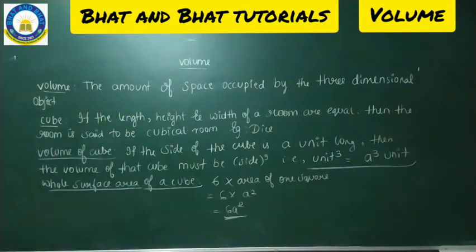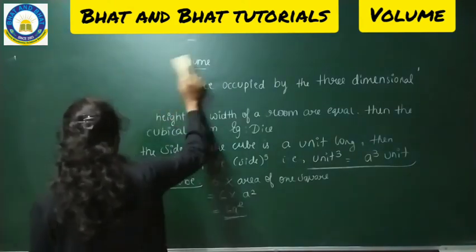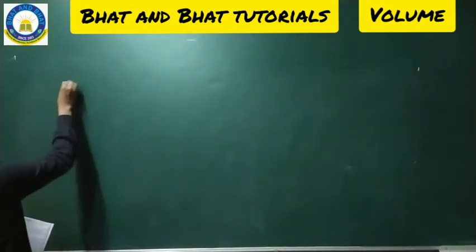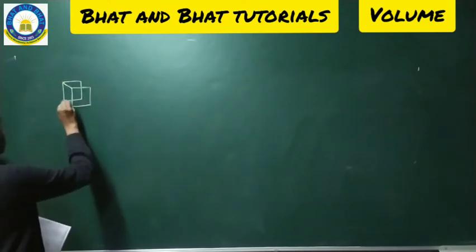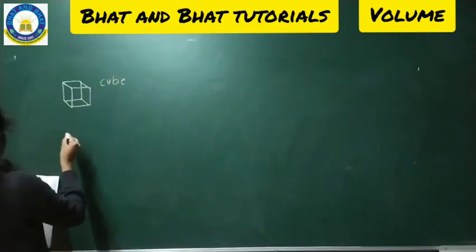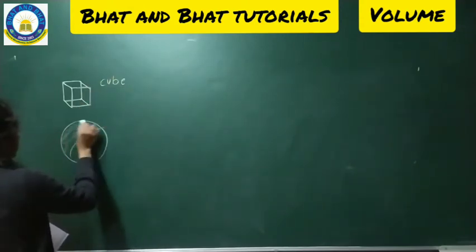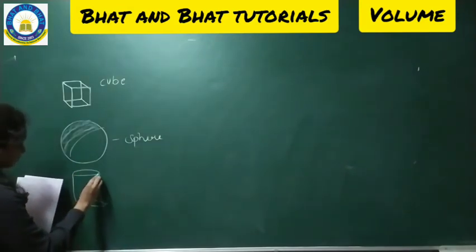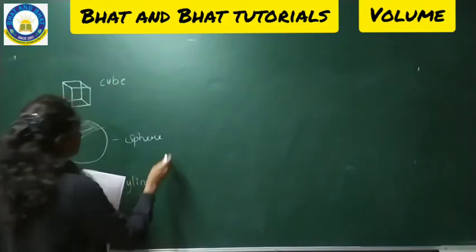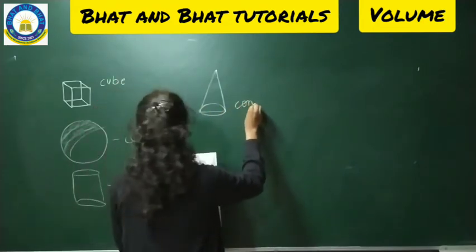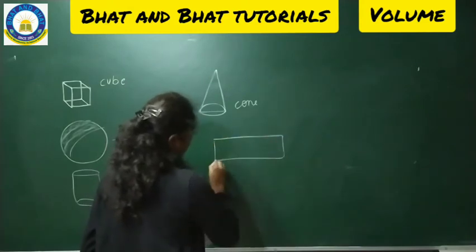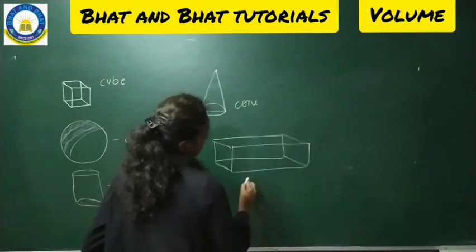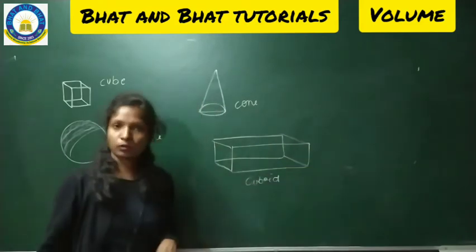Hope you all completed the theory part of volume. Now I'll go with some figures so that when you see the figure you will understand easily. This shape I call a cube, this one I call a sphere, this one I call a cylinder, this one I call a cone, and this one is also a cube. You can make a note or just go through the diagram.